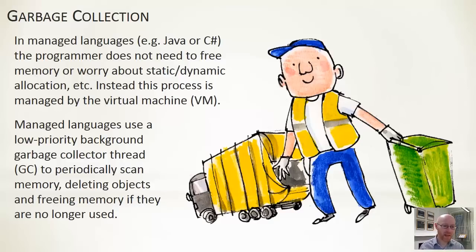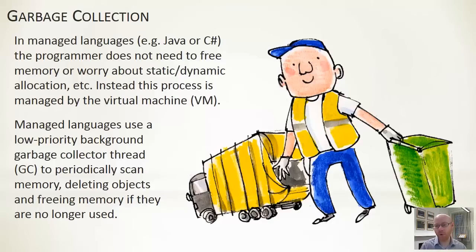The garbage collection process is responsible for going through all of our allocated data or objects and arrays, and working out when they're free — not being used anymore. The memory associated with them can be released, reused, and reallocated.